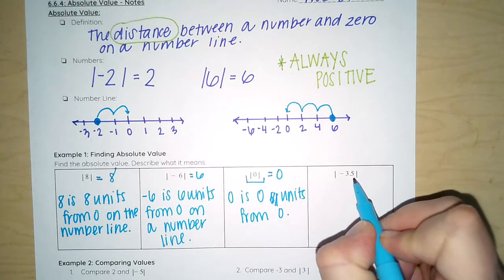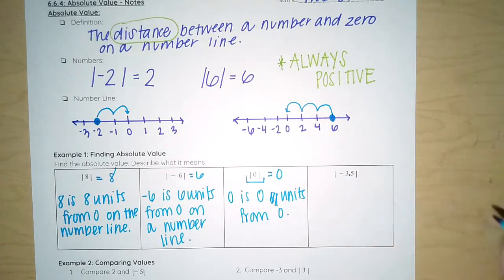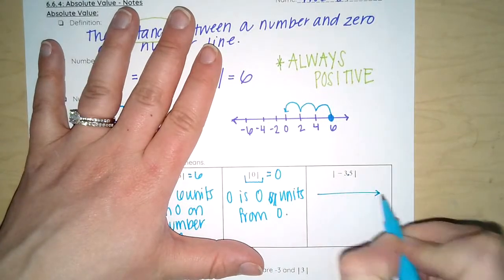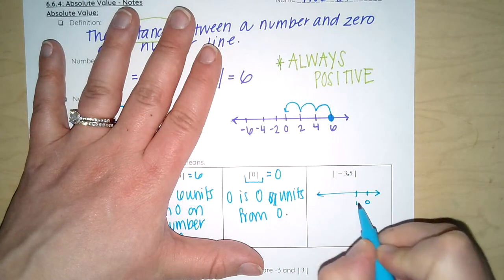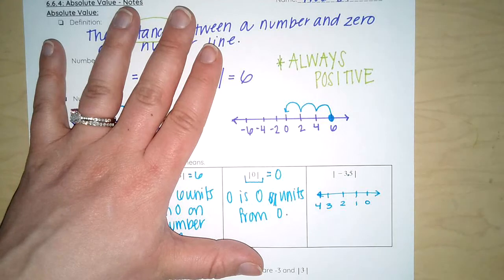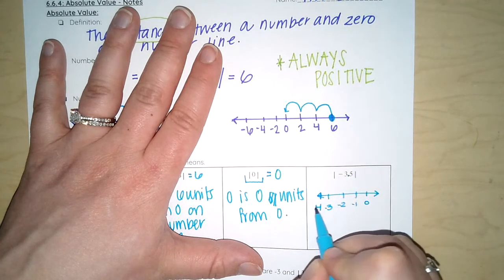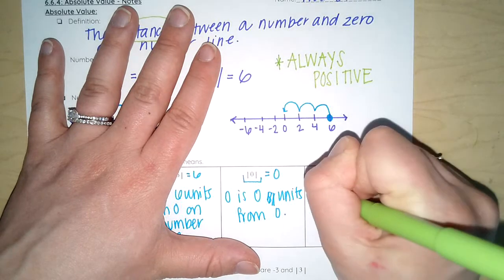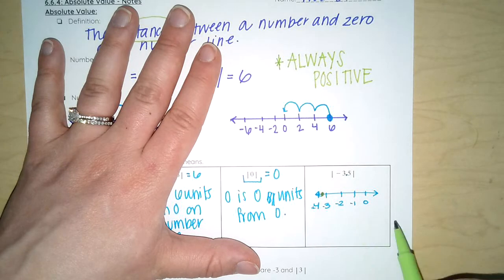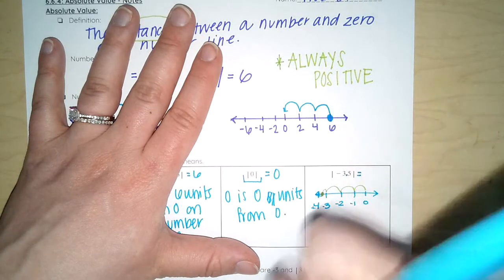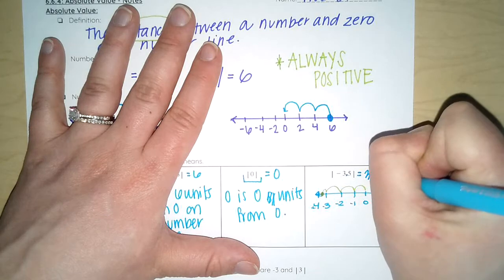And then one more example here — we have a decimal: negative three and a half. Same thing applies for fractions and decimals. If my negative three and a half is on the number line, negative three would be one full, two full, three full — half more. How many units is that from zero? It's half of one, one full, two full, three full. So the absolute value of negative three and a half is positive three and a half.